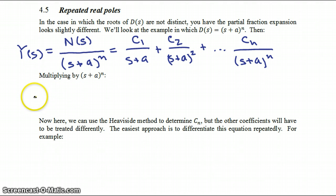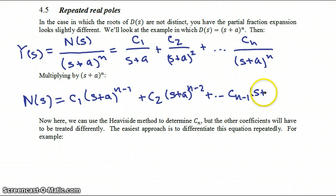Now if we multiply through by s plus a to the nth, then we end up with our numerator equal to c1 times s plus a to the n minus 1 plus c2 times s plus a to the n minus 2 plus cn minus 1, s plus a to the n minus 1, plus cn.